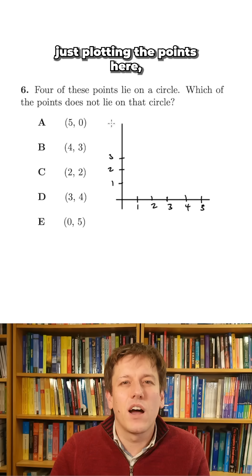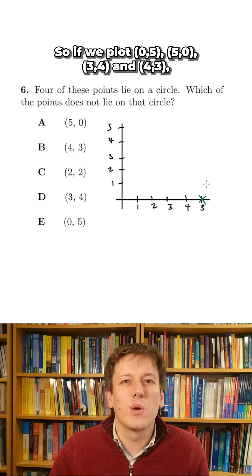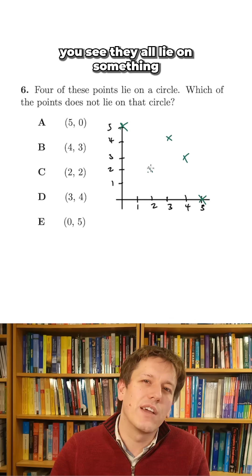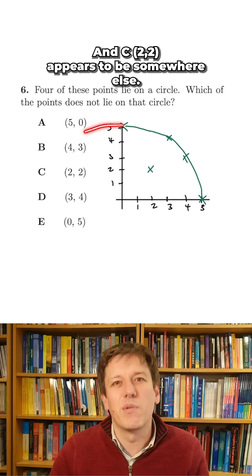For a maths challenge, just plotting the points here will get you quite a long way. So if we plot (0,5), (5,0), (3,4), and (4,3), you see they all lie on something that looks like a circle here, and C(2,2) appears to be somewhere else.